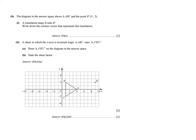A translation maps B onto B apostrophe — B onto its image. Write down the column vector that represents this translation. A translation is moving a point according to a particular number of units. What is important is that you follow their instructions where they say a column vector — with those two brackets — and then it has two numbers: a top and a bottom number.